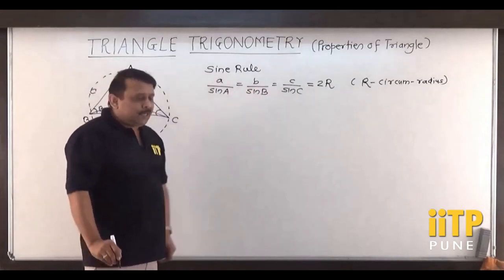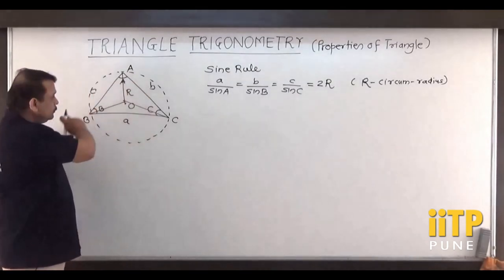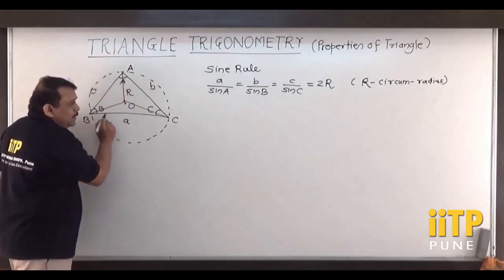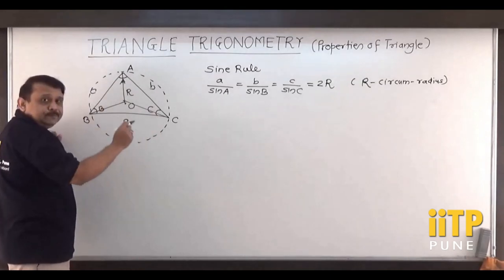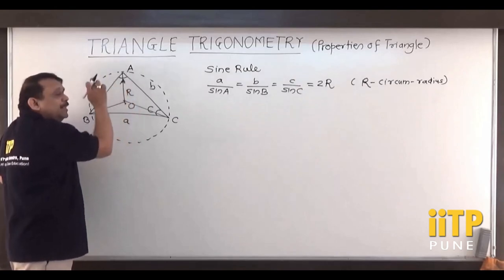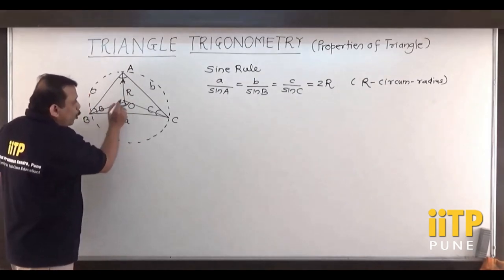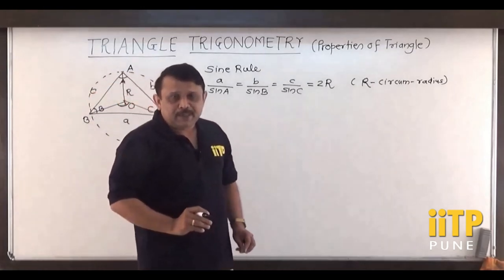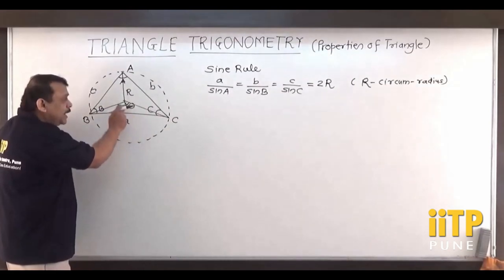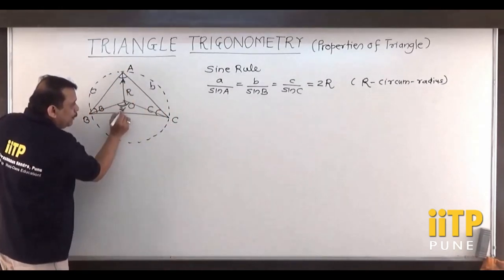Now how do we establish this result? Because this is the circle and this is the center of the circle, the chord BC subtends an angle A at the circumference, and BC also subtends some angle at the center of the circle. From geometry, we know that the angle subtended by BC at the circumcenter is double that at the circumference. So if the angle at the circumference is A, the angle at the center must be double A, i.e., 2A.